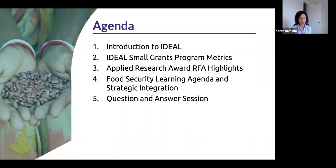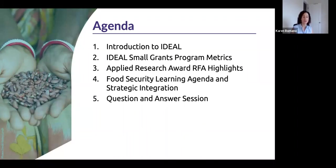For today's agenda, we'll start with a quick overview of Ideal. We'll then share some information on our overall small grants program that this RFA is part of. We'll then highlight some key elements of this new Applied Research Award RFA. After that, our panel member from BHA will speak about the food security learning agenda and on the theme of strategic integration. We'll follow that with a 15-minute question and answer session.